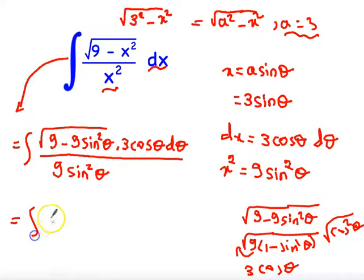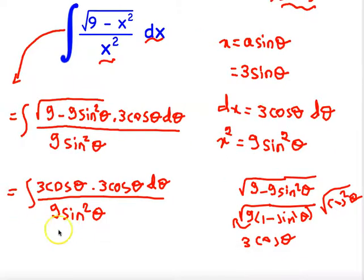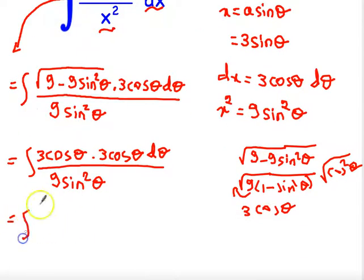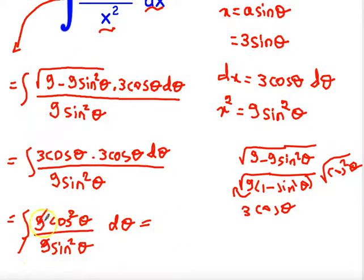The integral becomes ∫ (3·cosθ · 3·cosθ dθ) / (9·sin²θ). The 9's cancel, leaving ∫ (cos²θ / sin²θ) dθ, which equals ∫ cot²θ dθ.